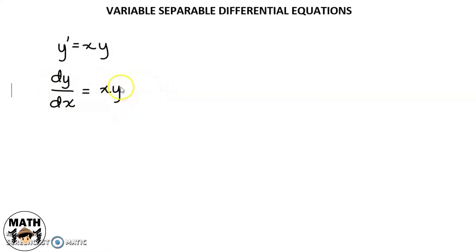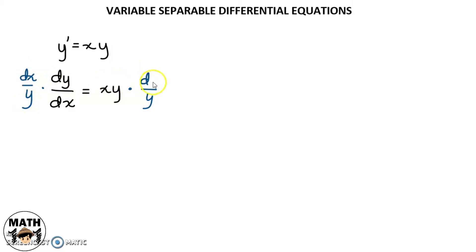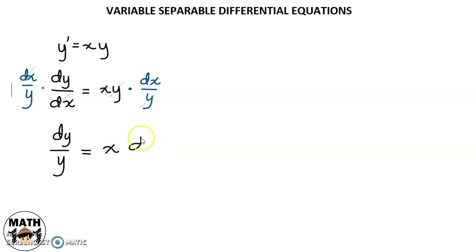Para malipat natin si y sa left side, divide natin both sides by y. Tapos, multiply natin both sides by dx. Notice na magkakancel si dx sa left side, and si y sa right side. So, we'll have dy over y, that is equal to x dx. Since we're able to do this, siya ay variable separable. To get the solution, we'll just integrate.